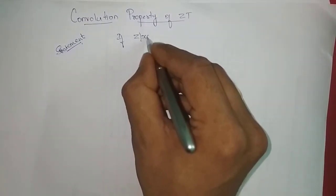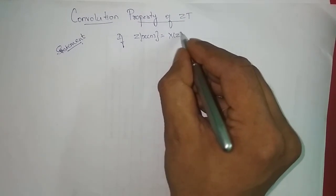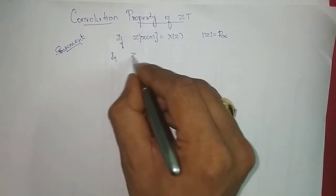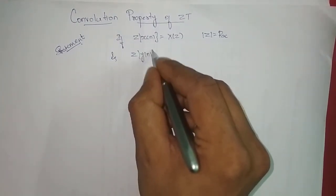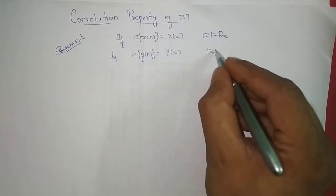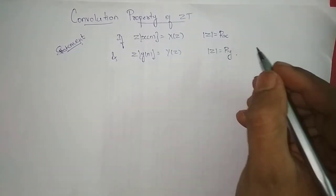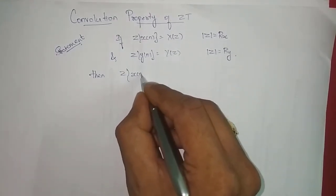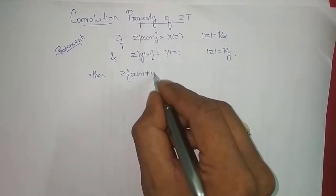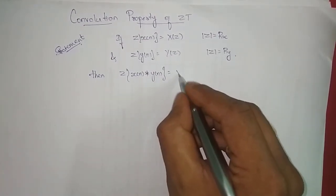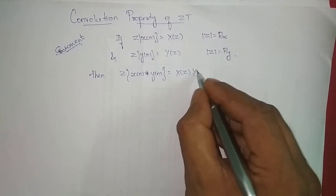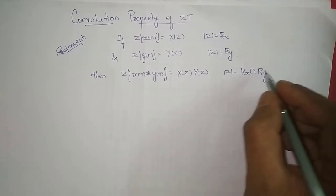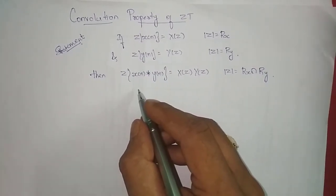If Z-transform of x of n is equal to X of z with ROC |z| = Rx, and Z-transform of y of n is equal to Y of z with ROC |z| = Ry, then Z-transform of x of n convolved with y of n is equal to X of z times Y of z, and the ROC is the intersection of Rx with Ry. This is the statement.